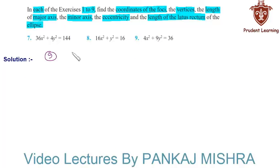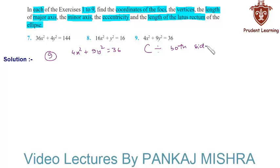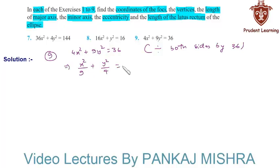Let us see the ninth problem. In question 9, the given equation of the ellipse is 4x² + 9y² = 36. Dividing both sides by 36, this can be written as x²/9 + y²/4 = 1.